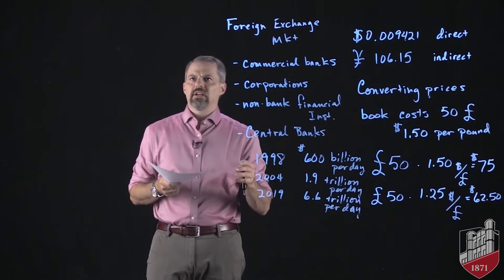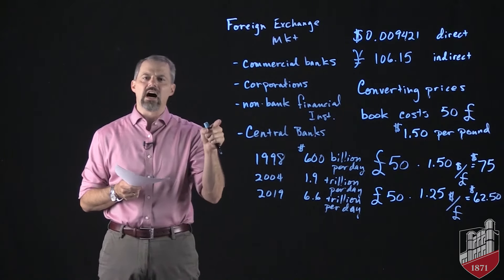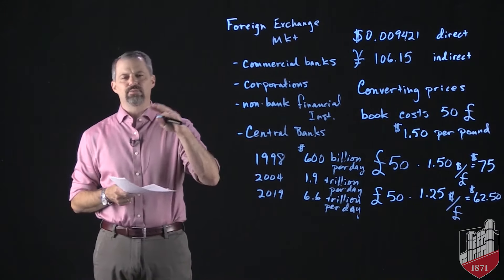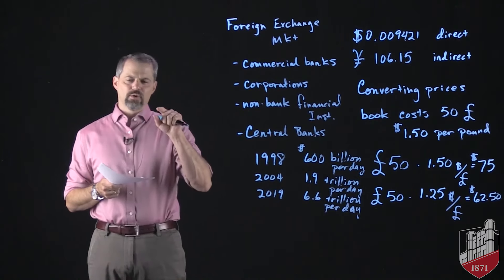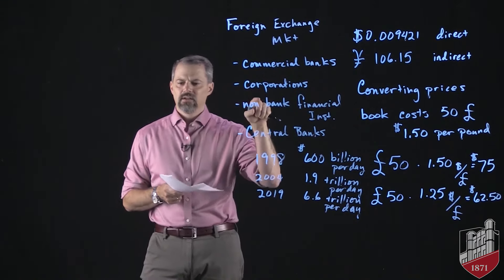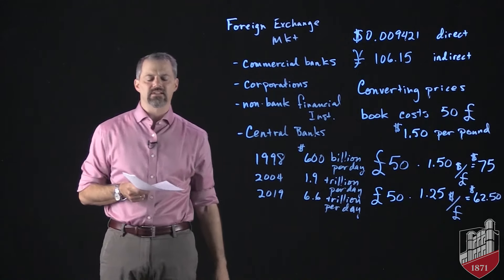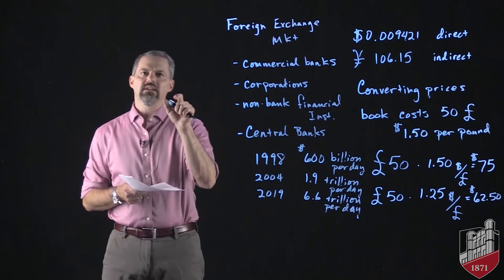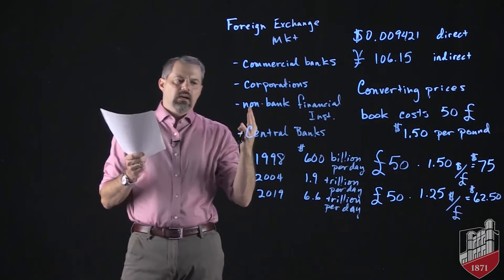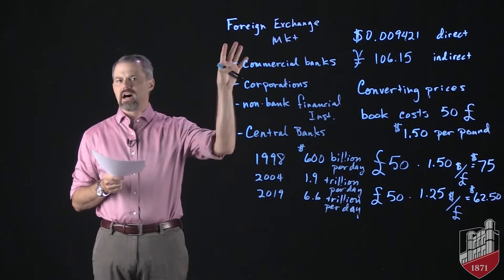A majority of transactions in the foreign exchange market are done through the dollar. For example, if you wanted to exchange British pounds for Israeli shekels, you would first exchange your pounds for dollars and then your dollars for shekels — we describe that as trading through the dollar. The dollar there is what we call a vehicle currency. The reason you would do that is it's easier to find someone who wants to exchange dollars for shekels than someone who wants to exchange pounds for shekels.